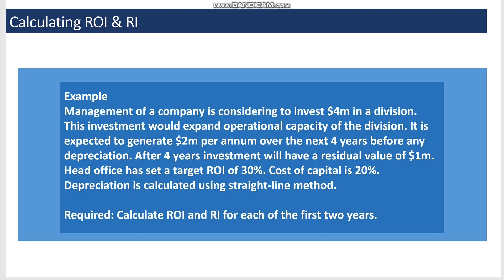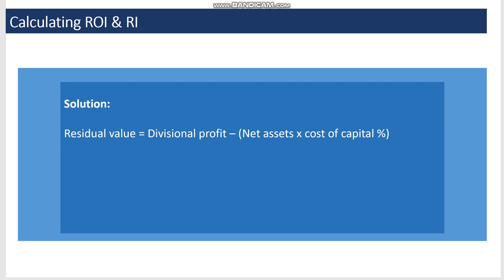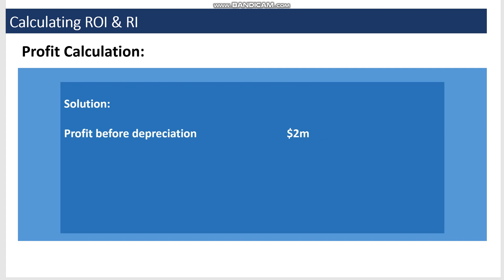The requirement is to calculate return on investment and residual income for each of the first two years. Once we learn how to calculate ROI and RI for the first two years, the same process continues for years 3 and 4. We need to extract the relevant figures — divisional profit and divisional net assets.